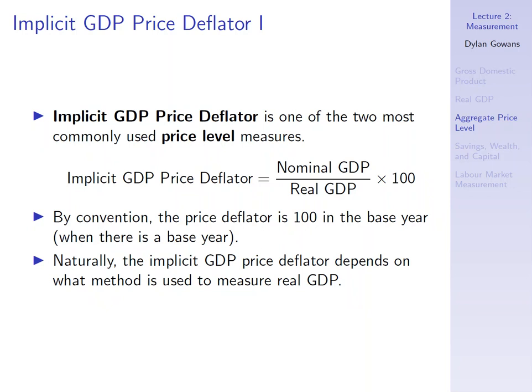The implicit GDP price deflator is one of the two most commonly used price level measures. All it is is you take nominal GDP in a year, divide by real GDP in that year, and multiply by 100. The further away nominal GDP is from real GDP, the higher these imaginary prices are. By convention, the price deflator is 100 in the base year, because nominal GDP and real GDP are the same in the base year.